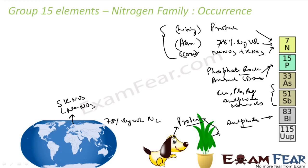So, proteins in living organisms contain nitrogen; 78% by volume of our atmosphere has nitrogen; and the earth's crust has nitrogen in the form of sodium nitrate and potassium nitrate. Phosphate rock in the earth's crust has phosphorus, and bones in animals also have phosphorus.